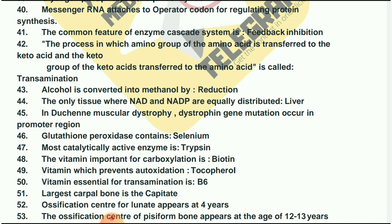Alcohol is converted into methanol by reduction. The only tissue where NAD and NADP are equally distributed is the liver. In Duchenne muscular dystrophy, dystrophin gene mutation occurs at the promoter region. Glutathione peroxidase contains selenium.